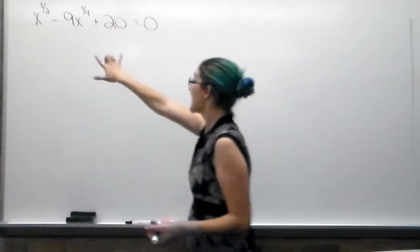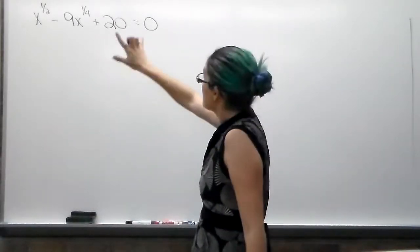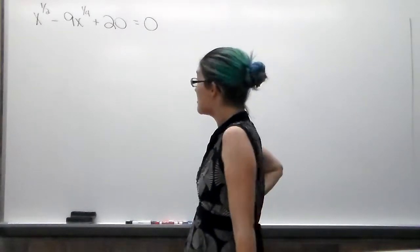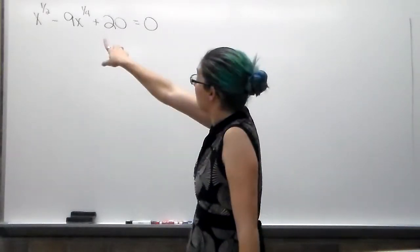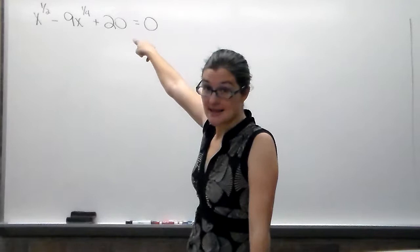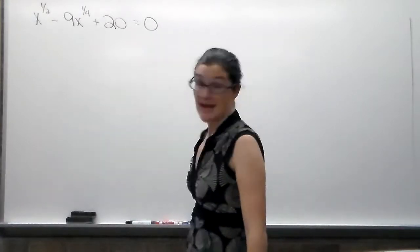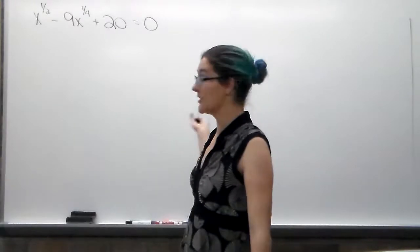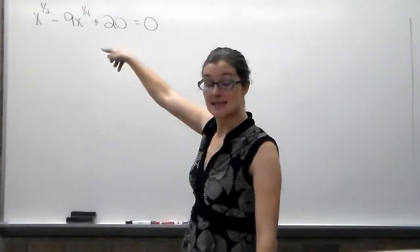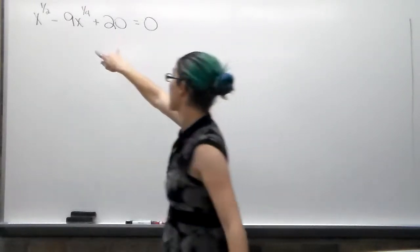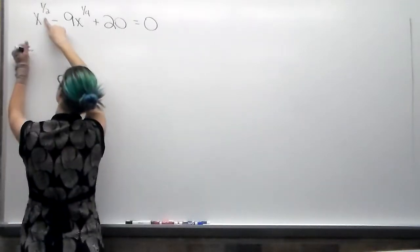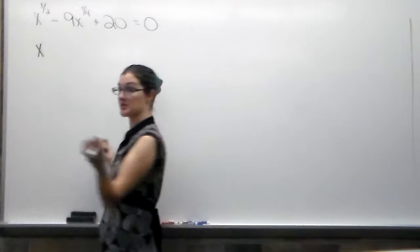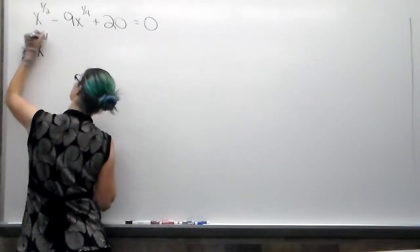What we're going to do is look at the exponents. First, in order to be able to do u-substitution to factor or do quadratic formula, the first exponent must be twice the second exponent. Well, 1 half is twice 1 fourth, or is 2 times 1 fourth, so that works. But we need them to at least have the same denominator as well. So I'm going to rewrite this one. Instead of 1 half, 1 half is the same thing as 2 fourths. I'm just scaling it up, undoing reducing.